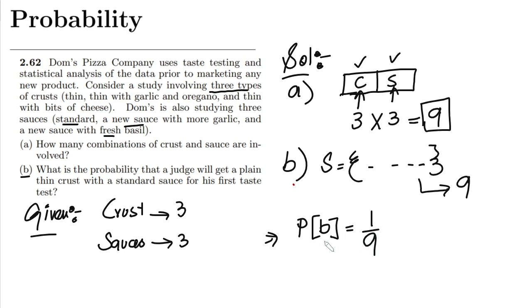So the probability of this B is what? This is 1 by 9. And this B is what? This B is the plain thin crust with the standard sauce.